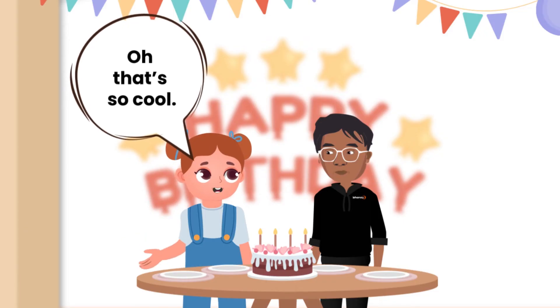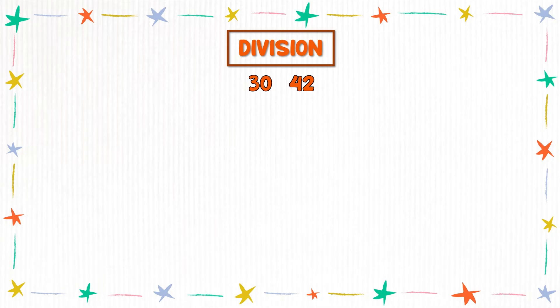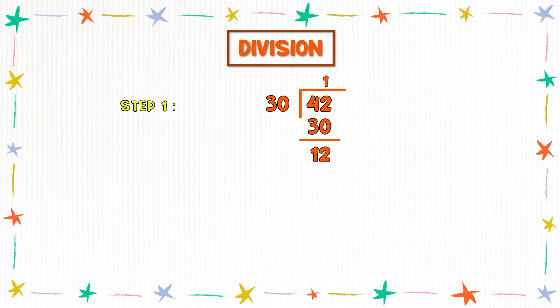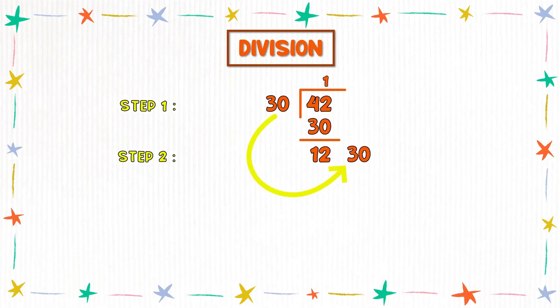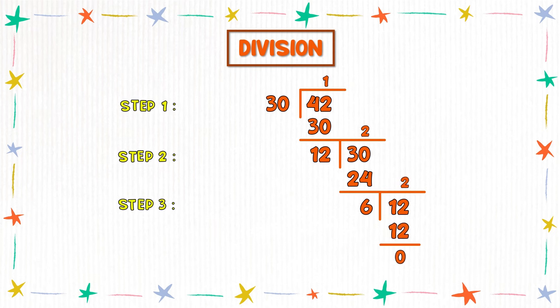Oh, that's so cool! What is the other way to find the HCF? The other method is the division method — this is a very interesting method. Step 1: take the larger number and divide it by the smaller number and check the remainder. Step 2: this remainder now becomes the new divisor and the divisor of the previous step becomes the new dividend, then we divide again. Step 3: continue the division process until we get the remainder as 0. The last divisor will be the HCF of the two numbers.